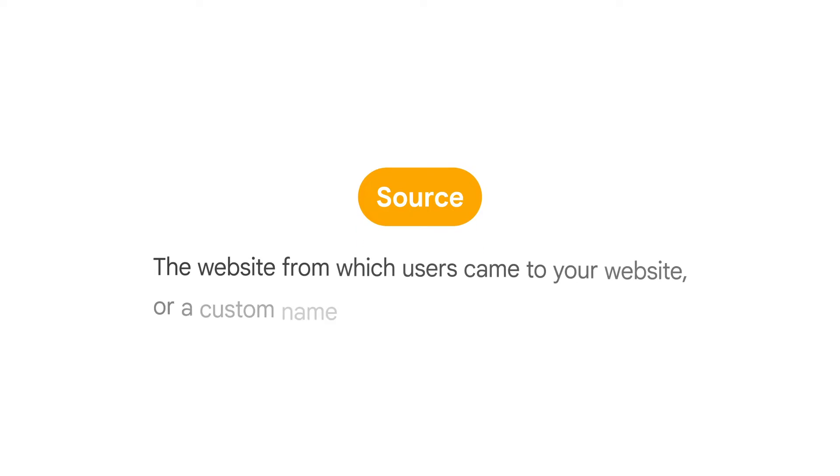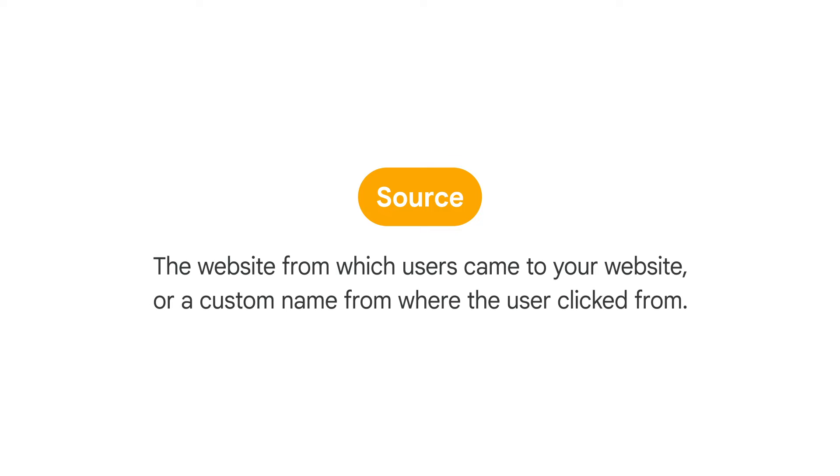Source is either the website from which your user came to your website, or a custom name for where the user clicked from. For example, you might see Google here for users who came to your site from Google Search, and you might also see various social media sites that referred users to your website. You could also see popular blogs that linked to your website, or a custom name when coming from something like an email. If a user came by typing your URL directly into their browser, or they had bookmarked your site, you'll see direct as the website traffic source.